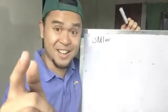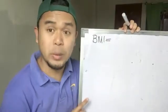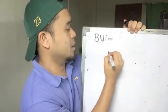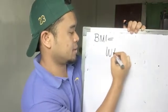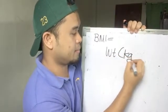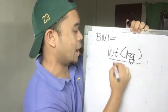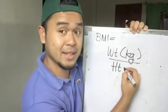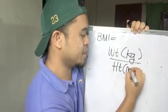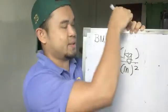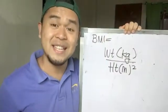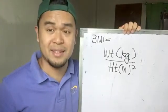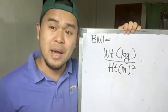Quick review: the formula for BMI is weight in kilograms over height in meters squared. That is how you compute your BMI.